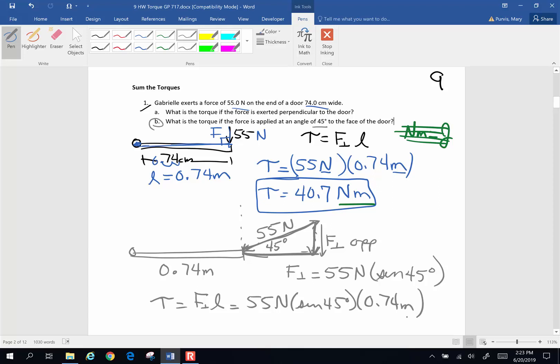And I'm going to put all that in the calculator. So sine of 45 times 0.74 times 55. Make sure I hit the right buttons here. And I end up with a torque of 28.8.